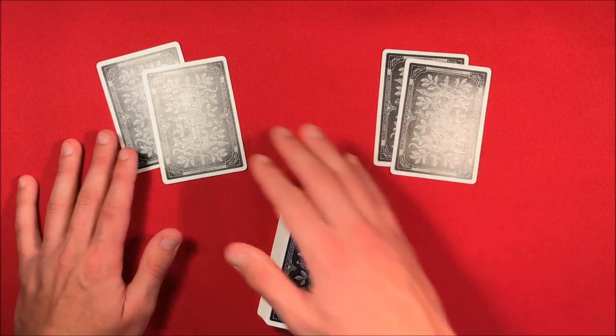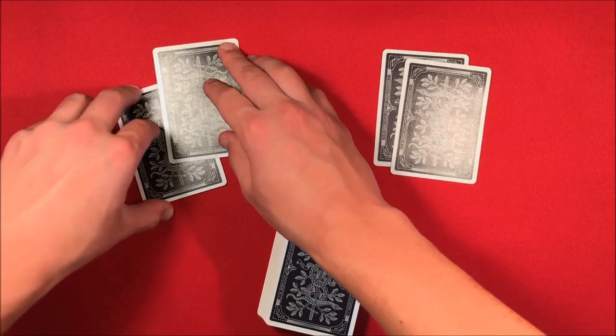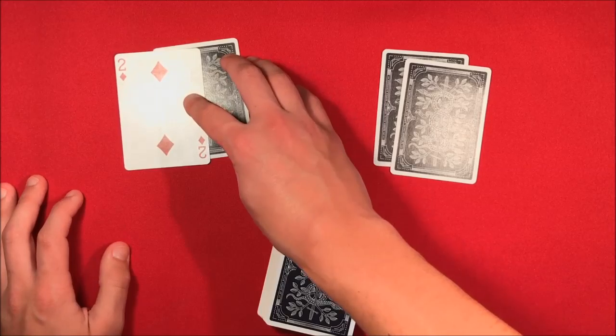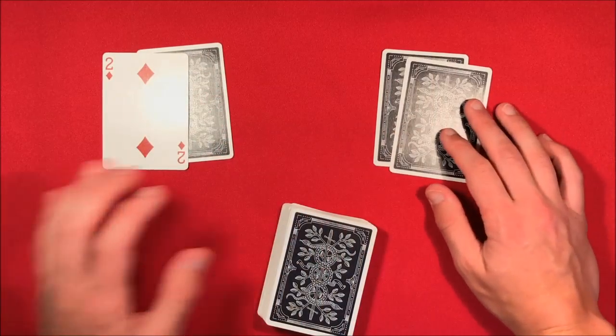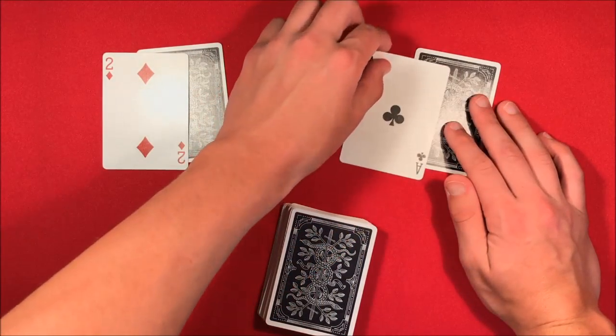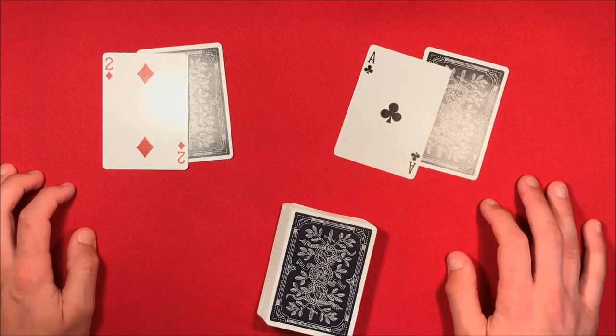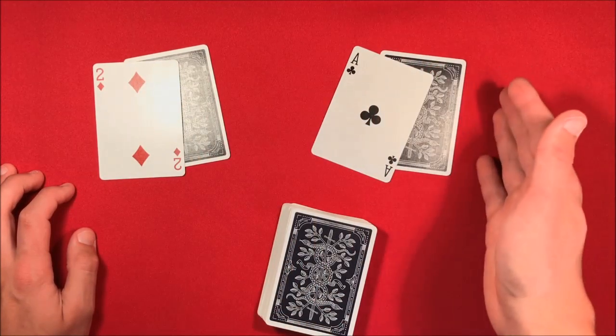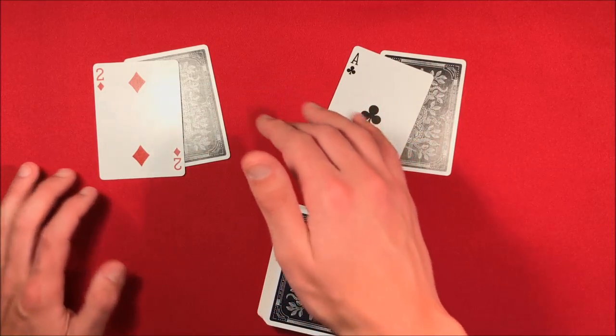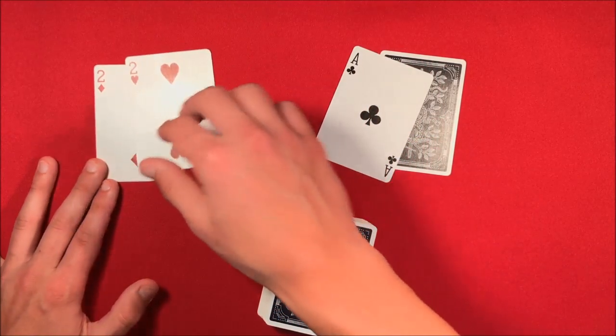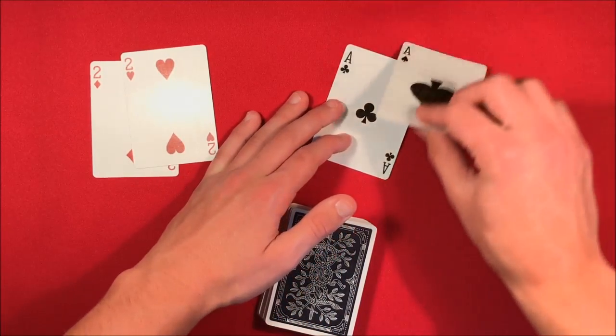You slide out the top card, you leave that on top of the deck. And then from here, to build suspense, you say, 'Okay, so to start off the trick I happen to choose or predict the two diamonds here,' and you flip your card over. And here's the ace of clubs.